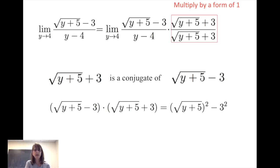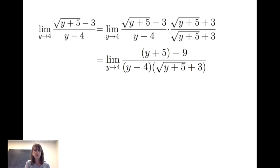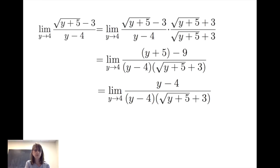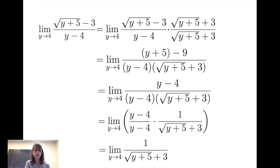The limit of the square root of y plus five minus three divided by y minus four is equal to the limit of y plus five minus nine divided by the product of y minus four and the square root of y plus five plus three as y gets close to four. Simplifying, this becomes the limit of one divided by the square root of y plus five plus three as y gets close to four.